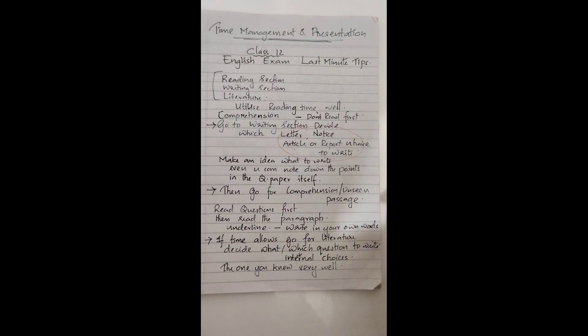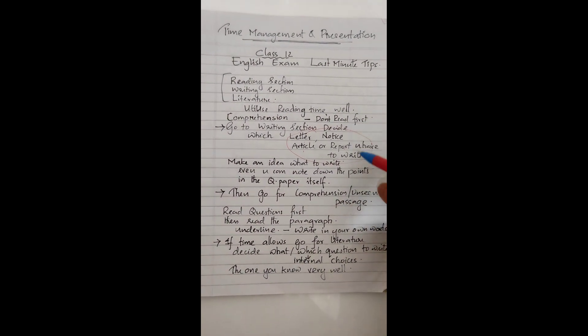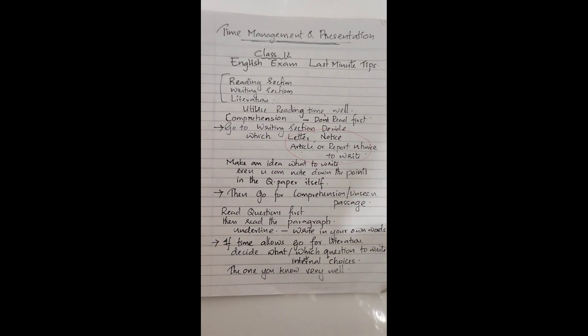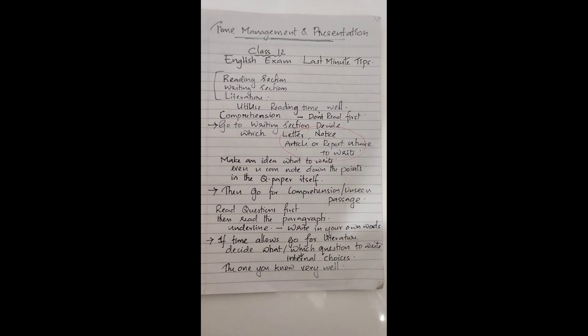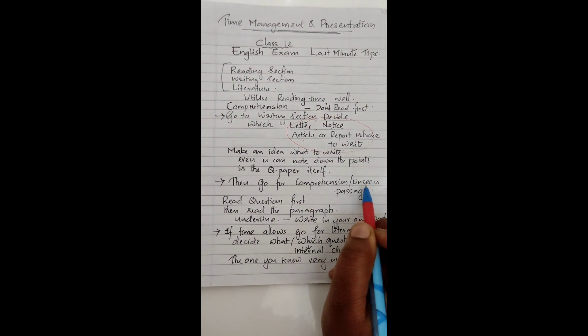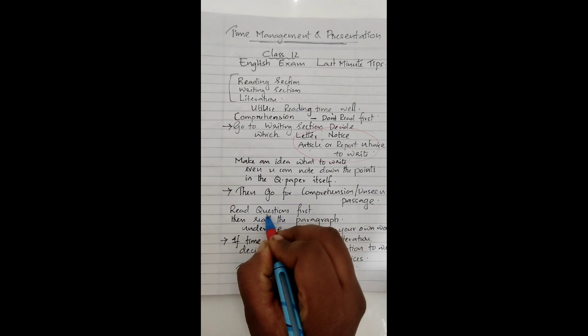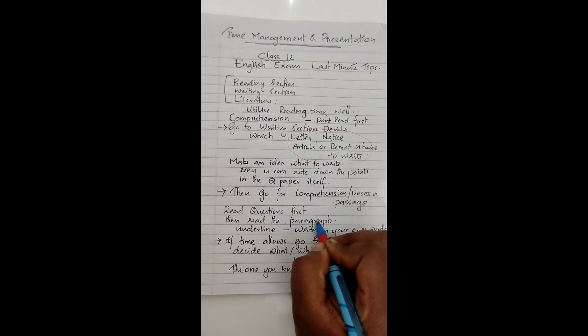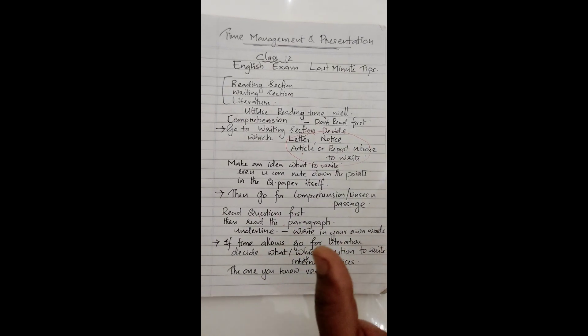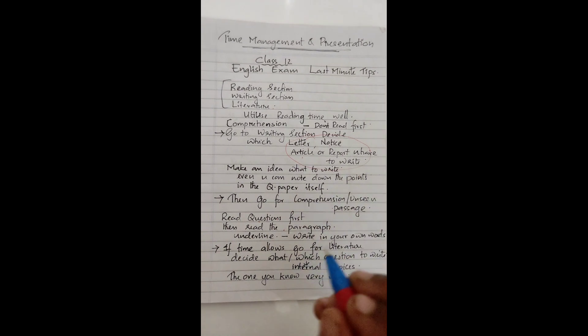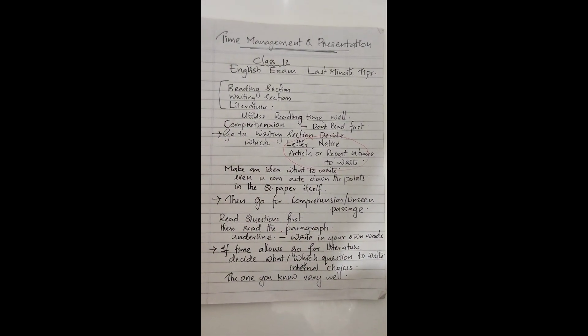And then once you finish this, go to the comprehension or unseen passage. I'm gonna spend a little idea so that you have to elaborate in mind, then you can elaborate that. So go for the comprehension session or unseen case-based passage will be there. First you have to read the questions, then read the paragraph, first paragraph or last paragraph, read the question.